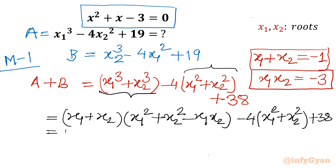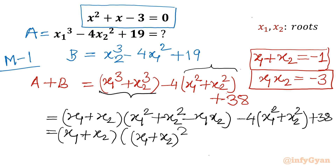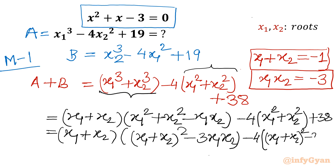I write x1 + x2 as it is. For x1² + x2², I write (x1 + x2)² — but that adds 2x1x2 extra, so I compensate with minus 2x1x2. Combined with the existing minus x1x2, that gives minus 3x1x2. Similarly, x1² + x2² = (x1 + x2)² - 2x1x2. So a + b = (x1+x2)[(x1+x2)² - 3x1x2] - 4[(x1+x2)² - 2x1x2] + 38.